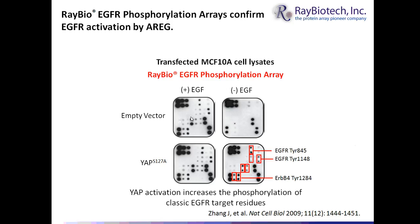They performed a similar experiment transfecting MCF10A cells with either empty vector or constitutively activated YAP, in either the presence or absence of EGF. In the presence of EGF, transformation and upregulation of phosphorylation occurs in either case. But only in the absence of EGF with constitutively active YAP were specific tyrosine residues identified as phosphorylated on the EGF receptor, confirming that constitutively active YAP activates amphoregulin, which binds to and promotes phosphorylation of the EGF receptor on neighboring cells.